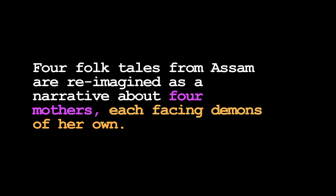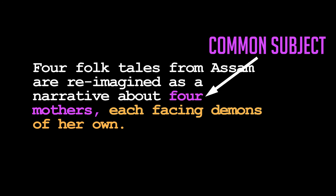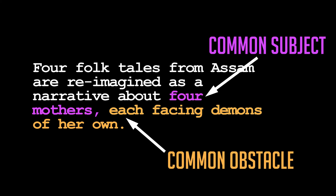This logline is tricky to write because Kothanodi has four separate stories. If we detail all four stories, then the logline would just run too long. Instead, we take out the common theme or subject in all of these stories and use that as the premise. If you notice, all stories have a common obstacle. Now we are able to have an effective logline for this film.